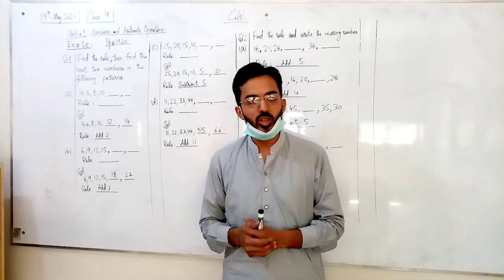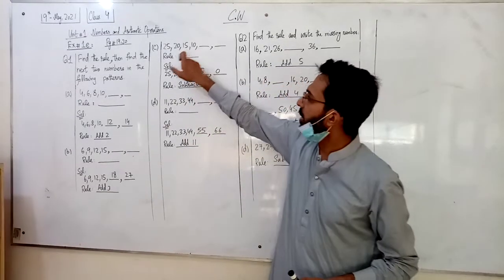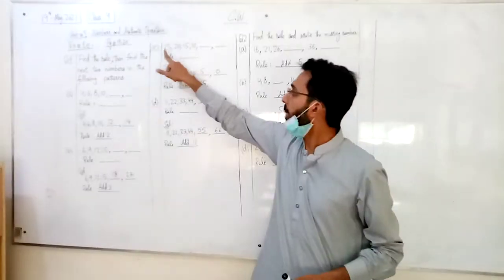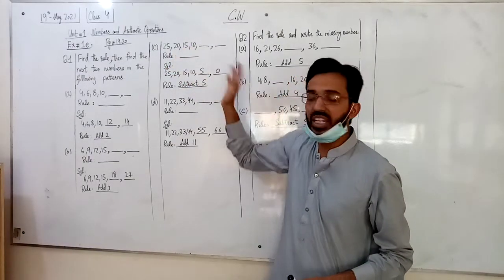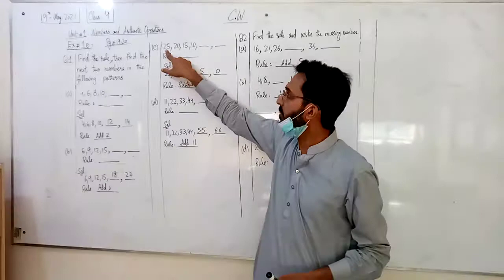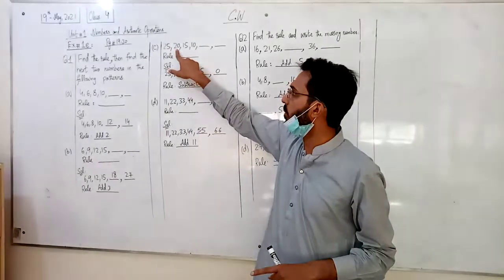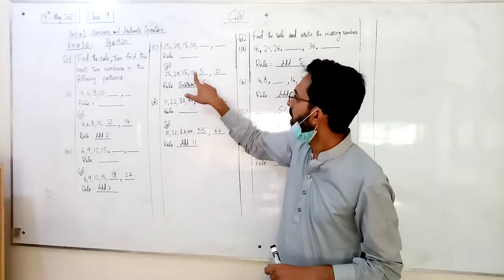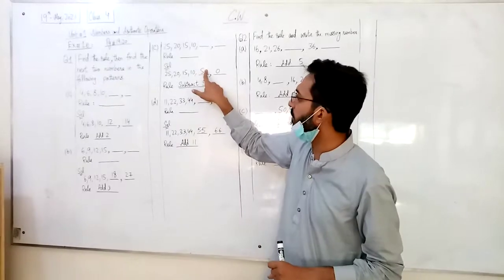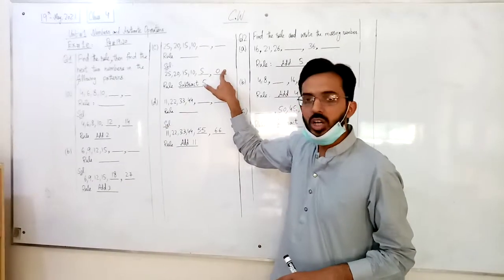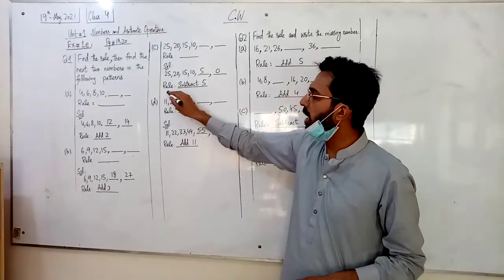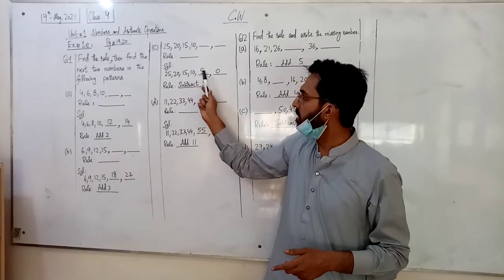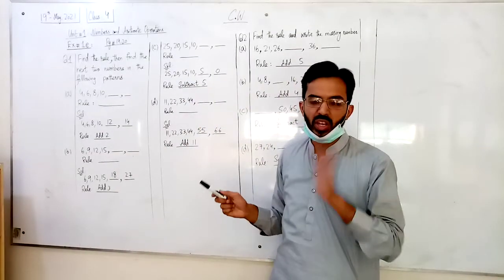C part: 25, 20, 15, 10. Now 5-5 numbers are minus. 25 minus 5 is 20, 20 minus 5 is 15, 15 minus 5 is 10, 10 minus 5 is 5, 5 minus 5 is 0. The rule is that everyone has subtracted 5. What will be subtracted? 5 minus.